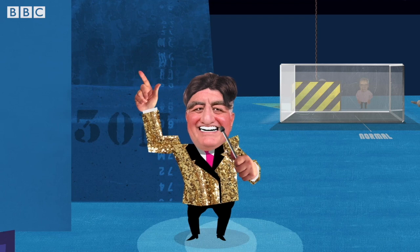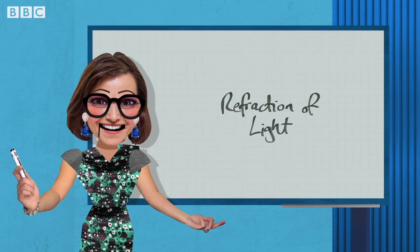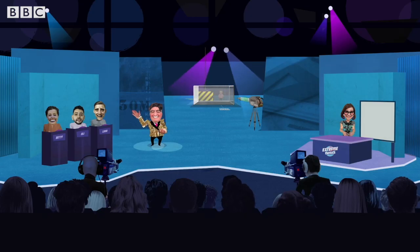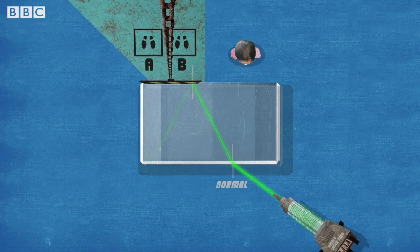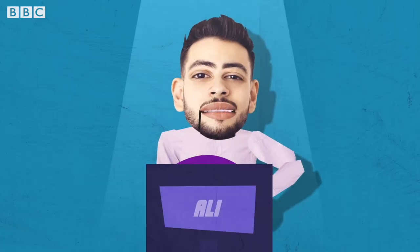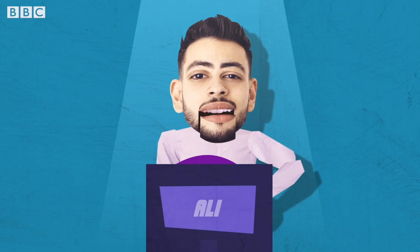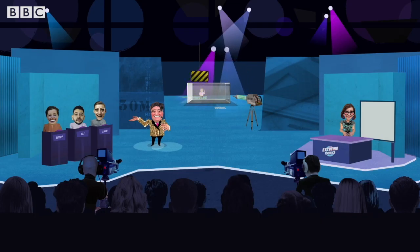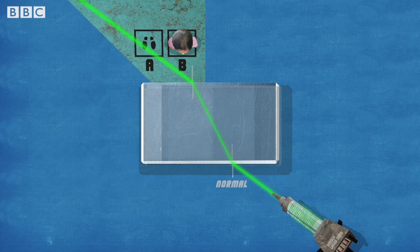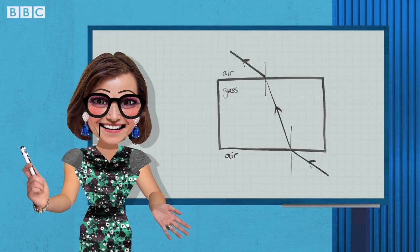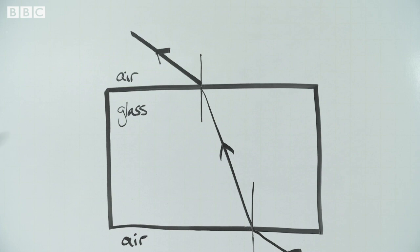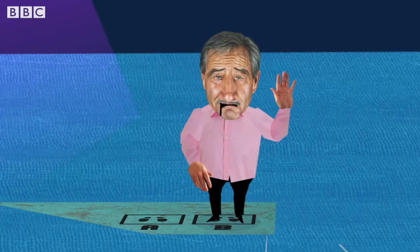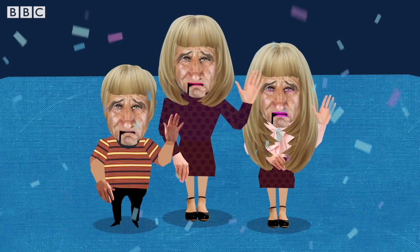So, Rula, what does the future hold for Jim? I have high hopes he will survive. This is not a difficult question. 3, 2, 1, GO! Ali from McAdooey, what's your answer? B? Rula, is he right? Lift the gate. We know that the light bends away from the normal when traveling from glass into air. So B is correct and Jim can go home with his family. It was never in doubt, Jim. Pleased for the family.